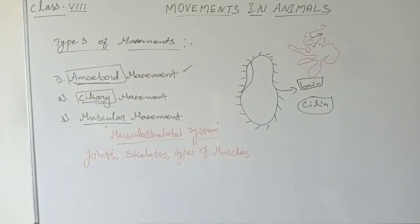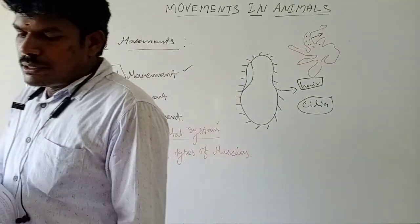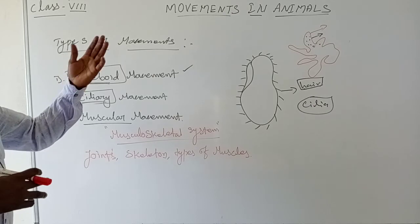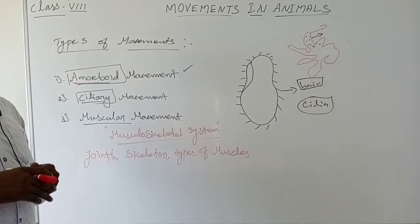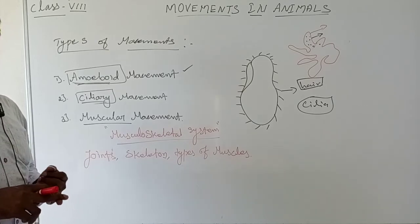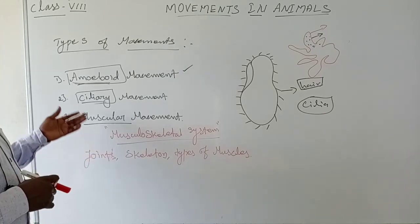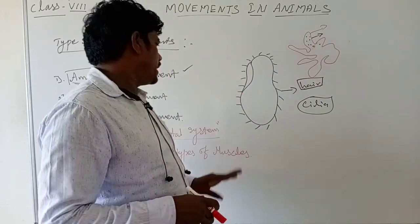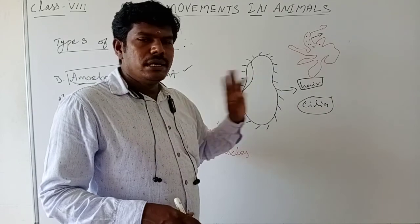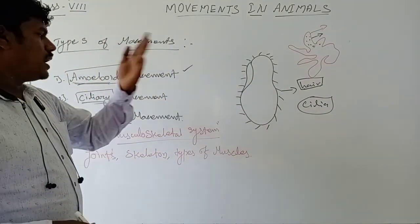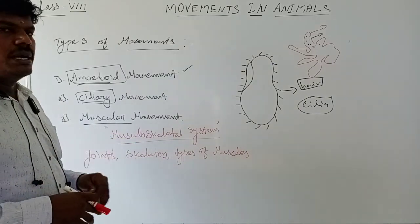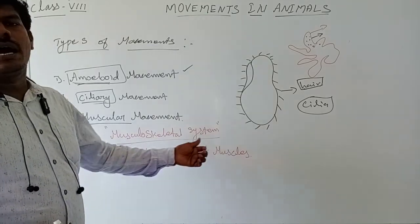So, to summarize: the types of movement present in animals and the human body are amoeboid movement, ciliary movement, and muscular movement. In this session we discussed fish movement, types of human body movements, amoeboid movement using pseudopodia and protoplasm in amoeba, ciliary movement using hair-like cilia structures, and muscular movement which is otherwise called the musculoskeletal system — a complex system where you need to understand joints, skeleton, and types of muscles. Thank you.